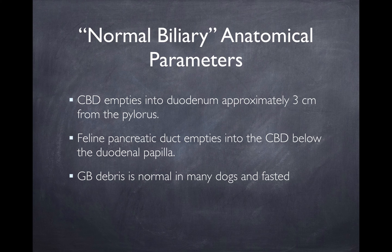Given all the triaditis out there — pancreatitis, upper GI disease, duodenitis — the duodenal papilla is often an area that gets secondarily obstructed and can cause complications, and we need to evaluate that on ultrasound. The pancreatic duct in the cat, as opposed to the dog, enters into the common bile duct prior to hitting the duodenal papilla, whereas in the dog the common bile duct and pancreatic duct have separate entries into the duodenum.